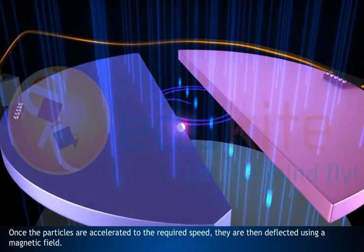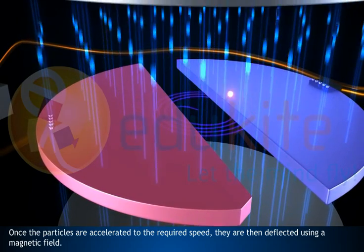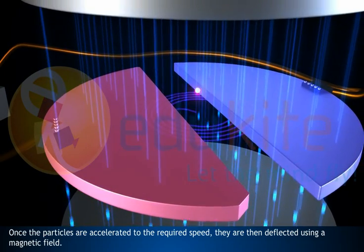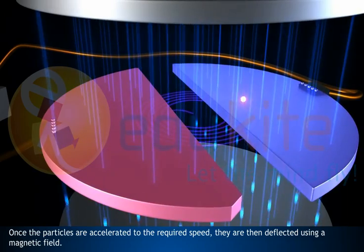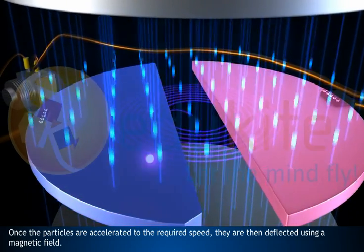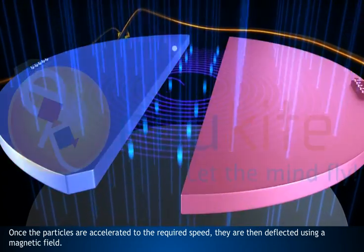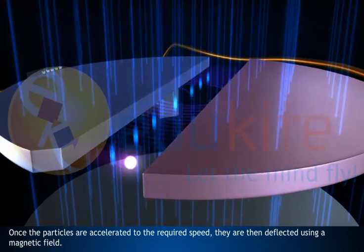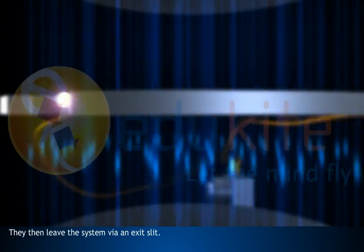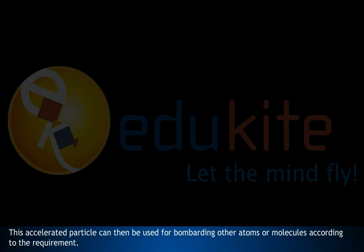Once the particles are accelerated to the required speed, they are then deflected using a magnetic field. They then leave the system via an exit slit. This accelerated particle can then be used for bombarding other atoms, molecules or solids according to the requirement.